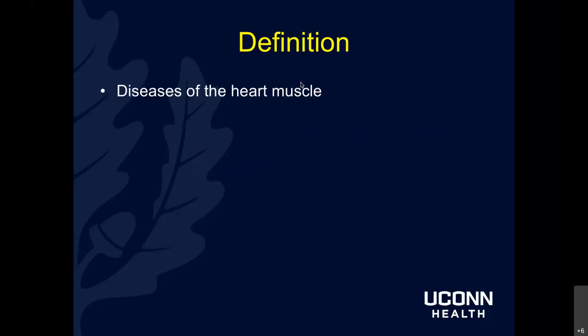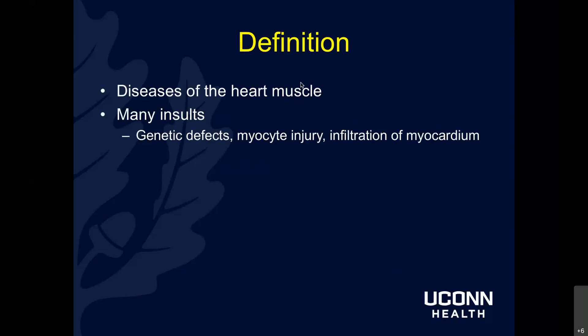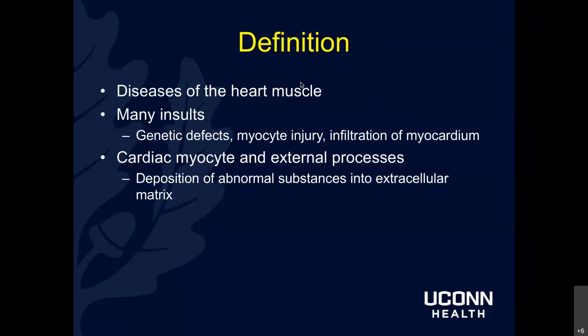The definition of cardiomyopathy specifically is essentially a disease of the heart muscle - whereas ischemic heart disease and valvular heart disease are attributed to other factors, this is where truly the myocardium itself is the issue. This process results from many different types of insults to the myocardium: genetic defects, myocyte injury, infiltration, issues inherent to the cardiac myocyte, as well as external processes - deposition of abnormal substances into the extracellular matrix or an issue with the cardiac myocyte itself.